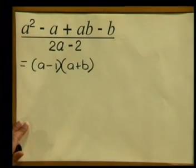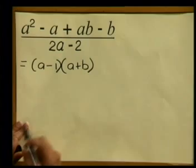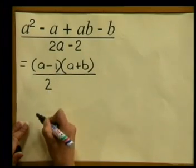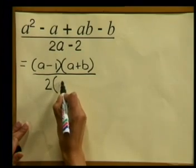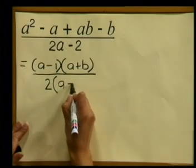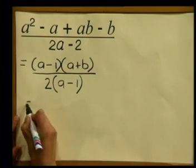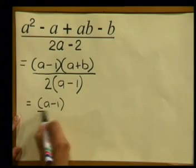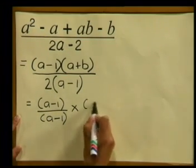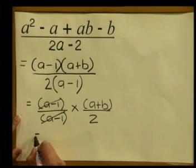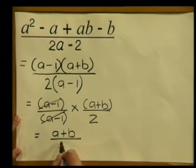And that was all divided by our denominator. Notice in this situation, we can also factorize our denominator. In those two terms, we have a common factor — 2 is our common factor, so we take it out. 2 into 2a, we are going to be left with a. 2 into 2, we are going to be left with 1. Now that we have factorized our numerator and our denominator, let's look for common factors. We have the common factors a minus 1, so we can rewrite this as a minus 1 divided by a minus 1, multiplied by a plus b divided by 2. Notice our common factors cancel out, and we are going to be left with a plus b, all divided by 2.